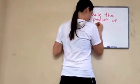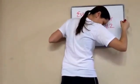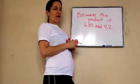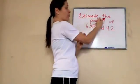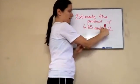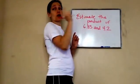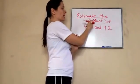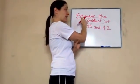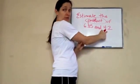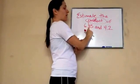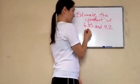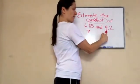They're wanting us to estimate the product of six point eight five and four point two, and they want us to round to whole numbers. Product means multiplication. They're wanting us to multiply these numbers, but estimate means you're gonna round them first. That'd be seven and four.